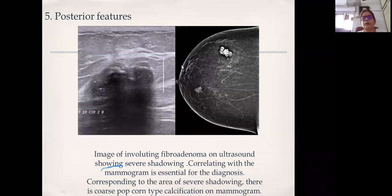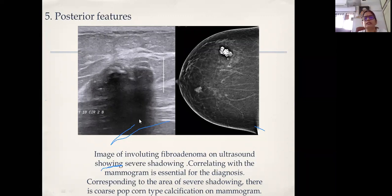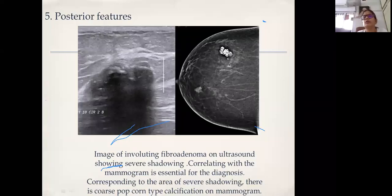The exception is an involuting fibroadenoma. Here you see a very coarse, popcorn-like coral appearance calcification on mammogram. It is calcified — stone hard — so obviously sound waves won't pass through, and you get dense shadowing on ultrasound. If you had only the ultrasound, this could look like a suspicious malignant lesion. That's why you should always look at both imaging modalities — ultrasound alone is not sufficient. One look at the mammogram: if the location matches, you know this is not malignant, just an involuting fibroadenoma, and nothing further needs to be done.